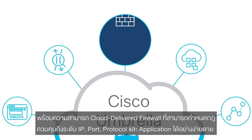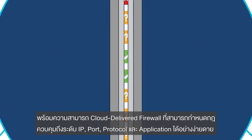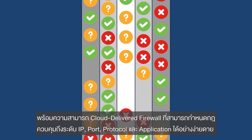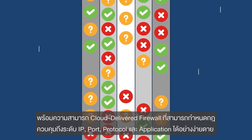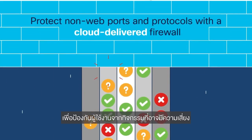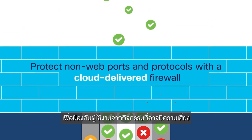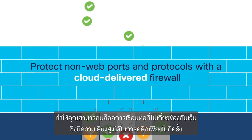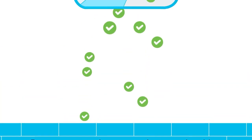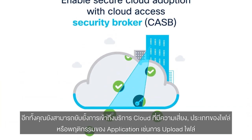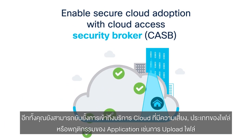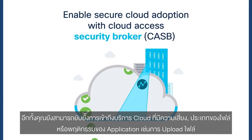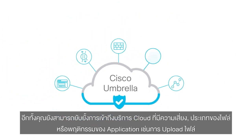A cloud-delivered firewall makes it easy to set IP, port, protocol, and app rules to prevent unwanted activity. You can block high-risk, non-web apps in a few clicks. You can also block risky cloud apps, certain file types, or even specific app behaviors like file uploads.